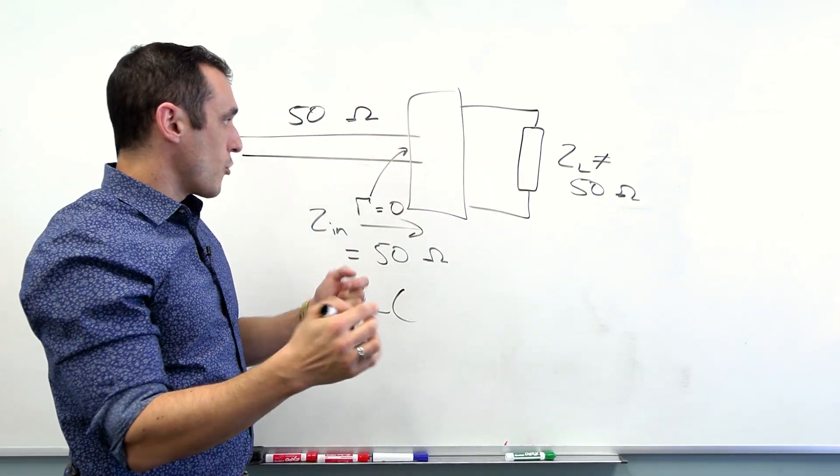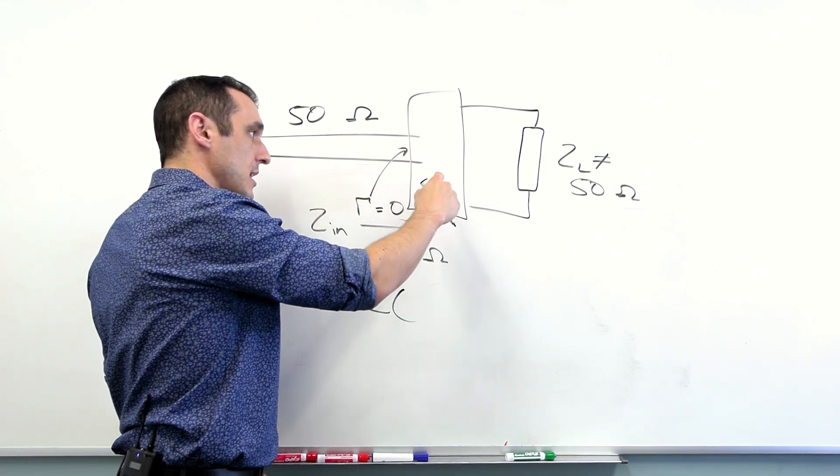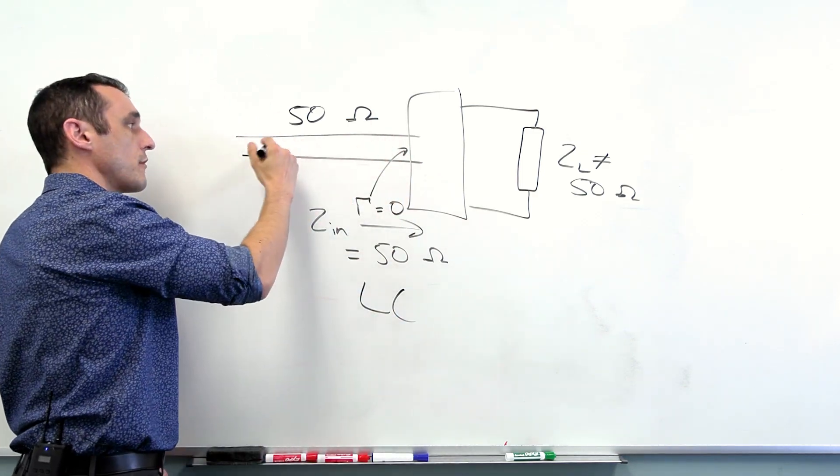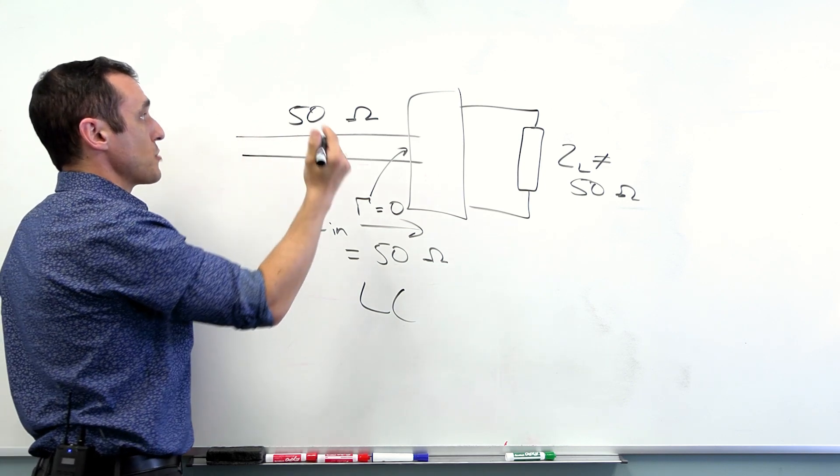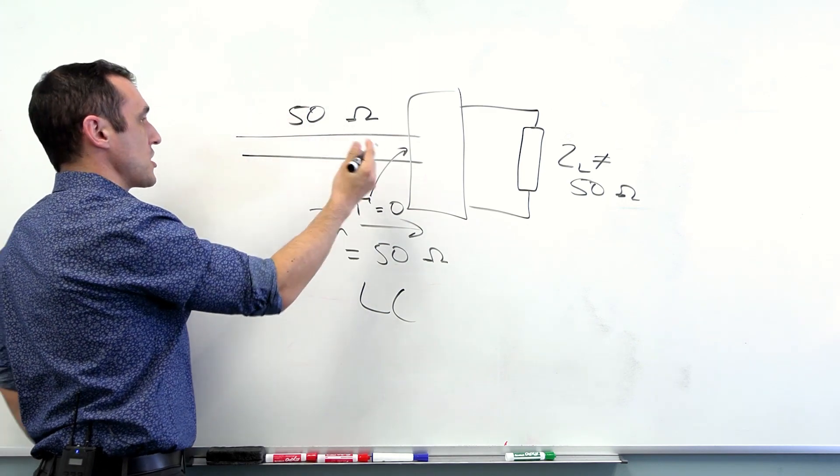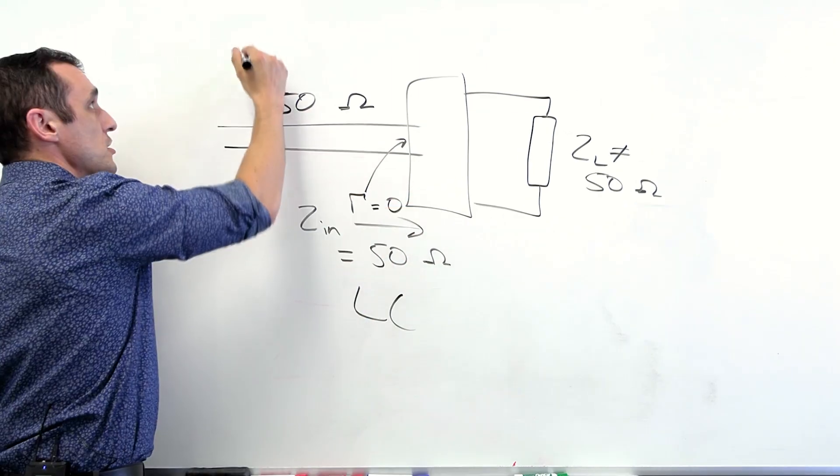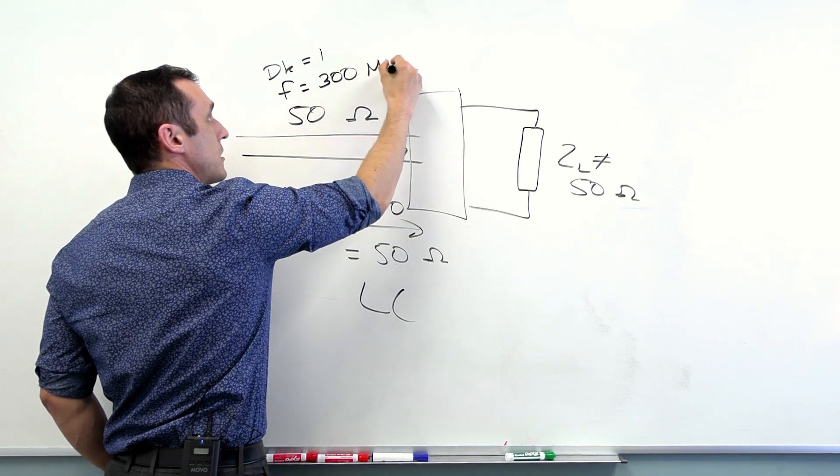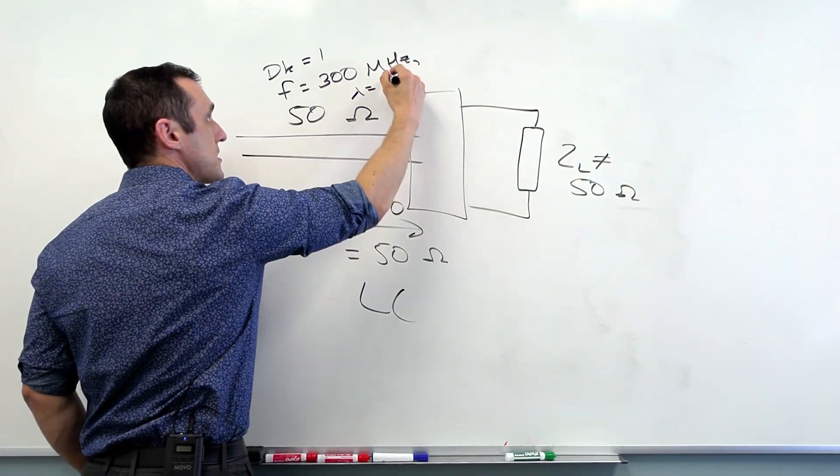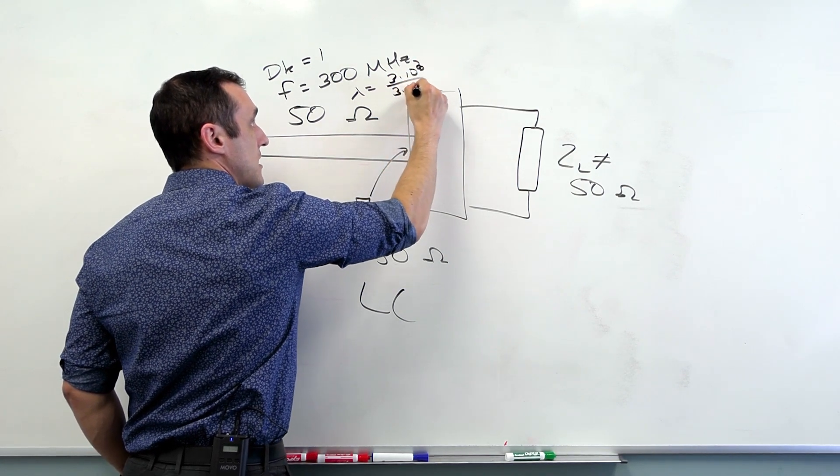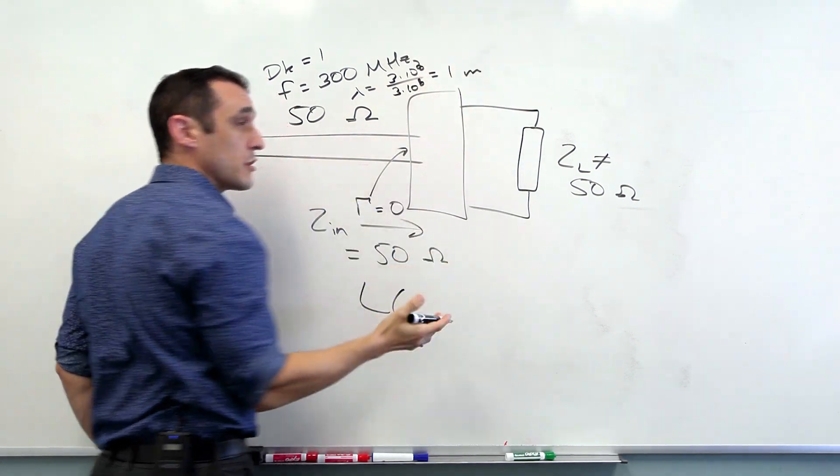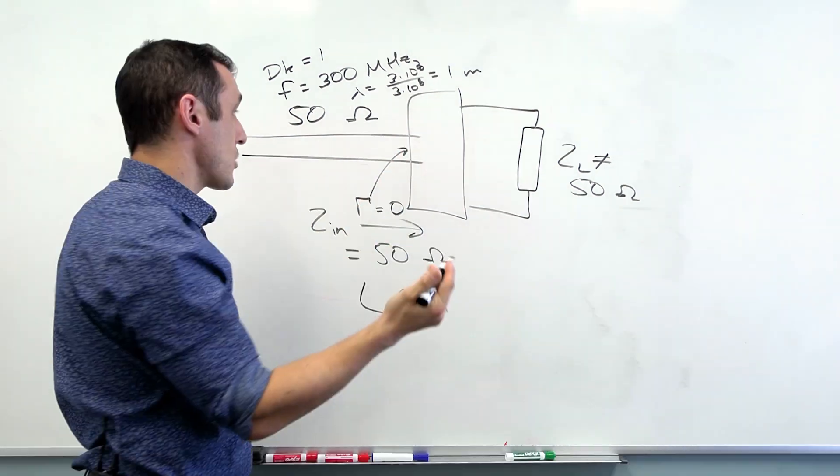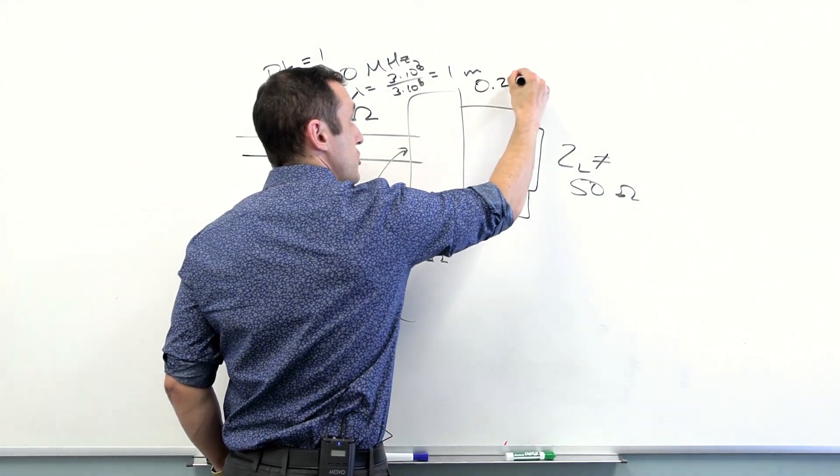Now a quarter wavelength impedance transformer essentially just takes this circuit, whatever it is, and then replaces it with a transmission line that is matched to a quarter of the wavelength of whatever the signal is on this line. Let's suppose for a moment that we're operating with just a conductor in air near some ground plane. So if my dielectric constant is one, frequency here is let's say 300 megahertz, my wavelength is three times 10 to the eighth divided by three times 10 to the eighth equals one meter.